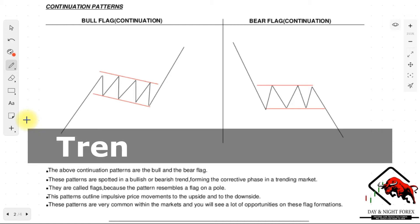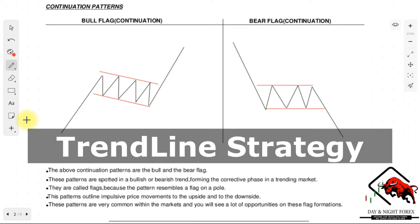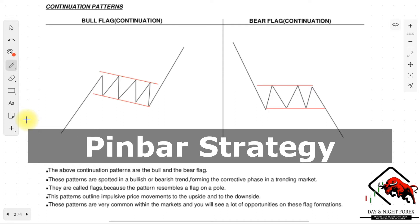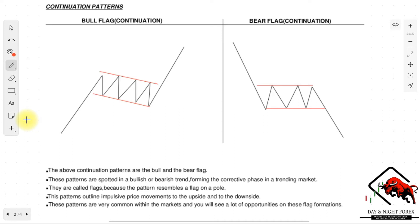The next strategy you'll learn is the trend line strategy. We just finished the candlestick pattern based on the pin bar strategies, and the trend line strategy will also be a build-up on the pin bar strategy. Overall, the bank trader strategy is the most powerful strategy you can use to dominate these markets. So first, we're going to get started with the continuation pattern.